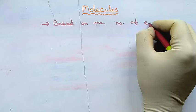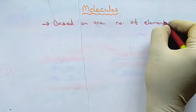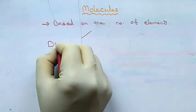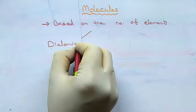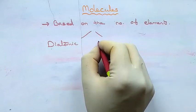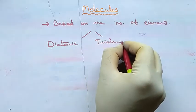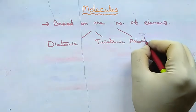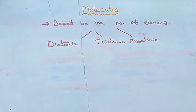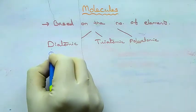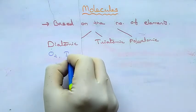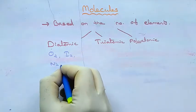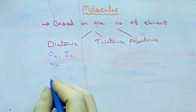Next we are going to see another classification based on the number of elements present. Based on the number of elements, molecules are classified into three types: diatomic, triatomic, and polyatomic.